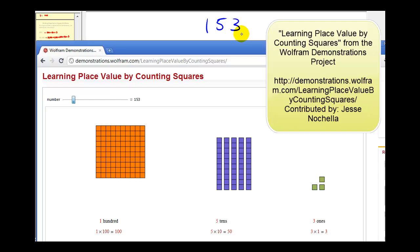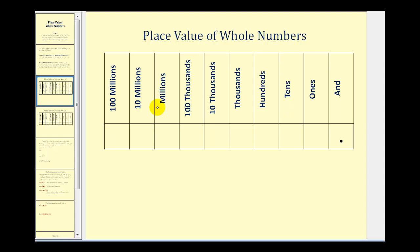Now let's take a look at a more comprehensive place value chart. Working from left to right we have the ones, tens, hundreds, thousands, ten thousands, hundred thousands, millions, ten millions, hundred millions, and so on. When writing large numbers, we separate the millions and the thousands with a comma, and the thousands and hundreds with a comma, to help keep the digits organized.